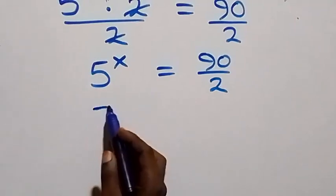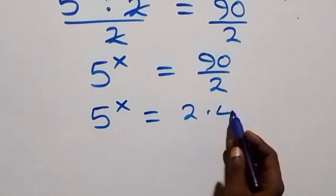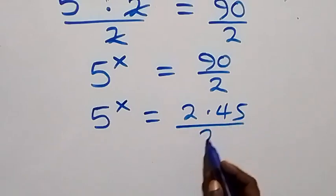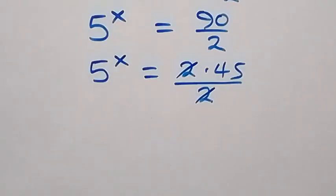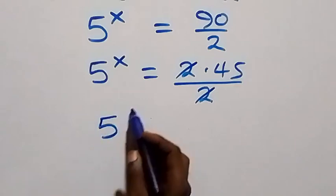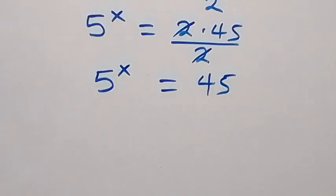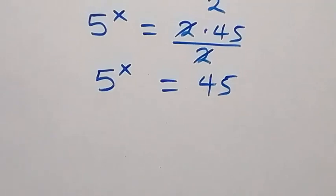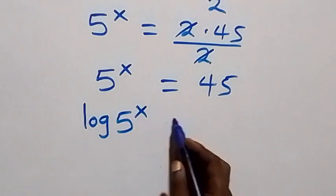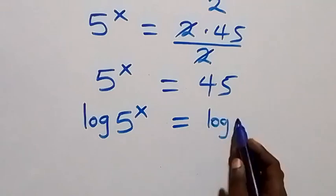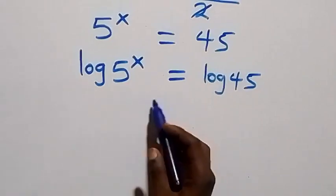Which implies we can rewrite this as 5 raised to power x equals 2 times 45 over 2. The 2 cancels each other, then we have 5 raised to power x equals 45 on this side. Then here we take the log on both sides: log 5 raised to power x equals log 45.